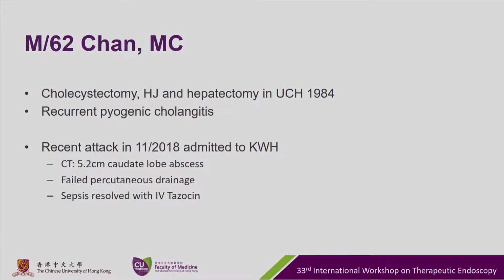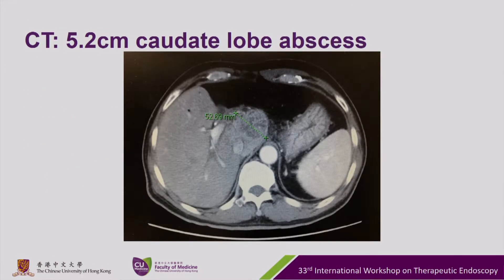A middle-aged gentleman who has a history of cholecystectomy, hepaticojejunostomy, and hepatectomy, and is suffering from recurrent pyogenic cholangitis. He was recently admitted to a peripheral hospital with a liver abscess in the caudate lobe, measured around 5 cm, failed percutaneous drainage, and the sepsis subsequently resolved with IV tazocin. Here is the CT image for the liver abscess.